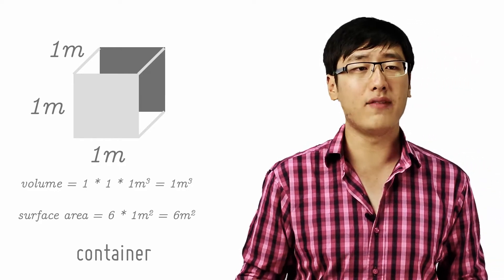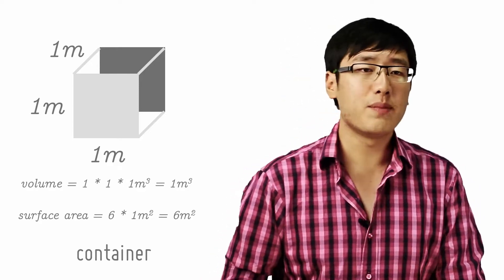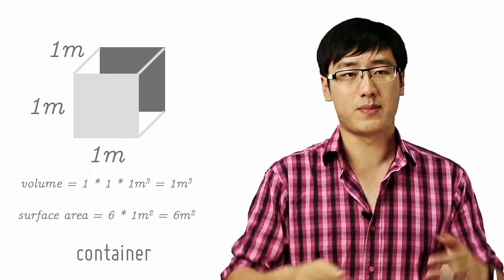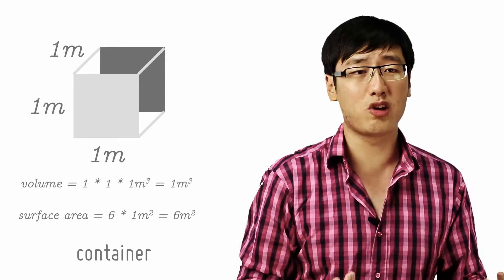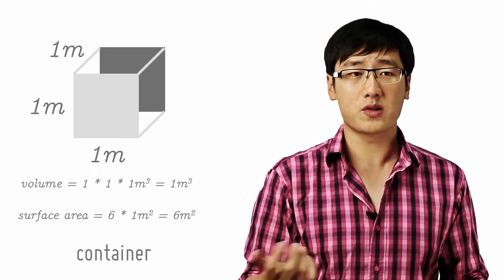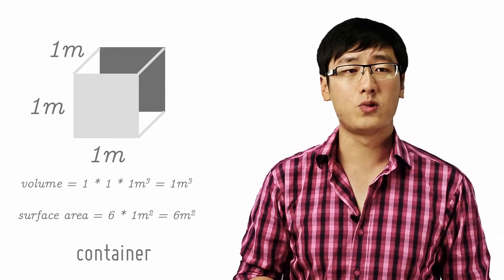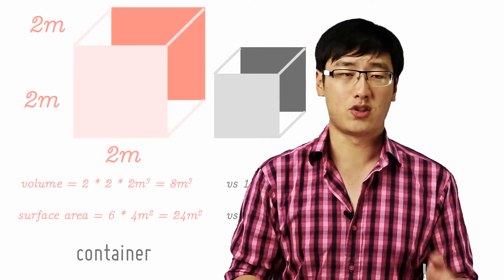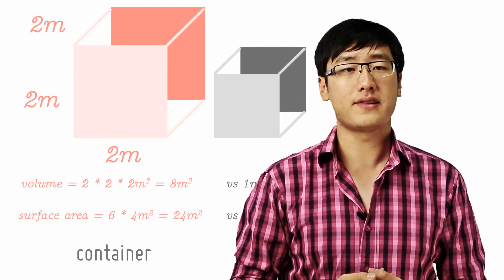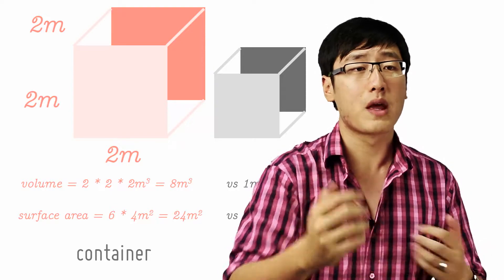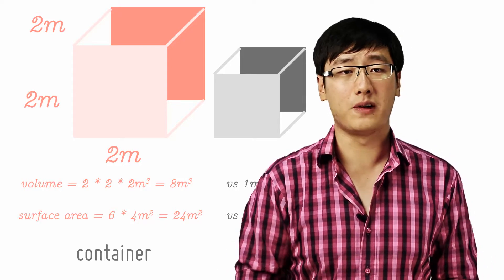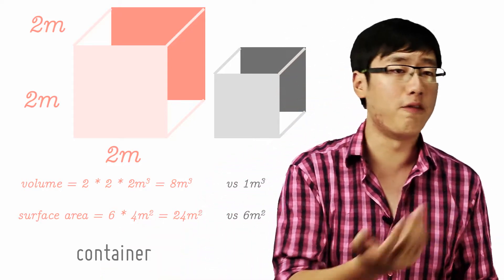Large containers have a bigger volume relative to surface area than smaller containers. For example, if you have a container one meter by one meter by one meter, it has a surface area of six square meters and a volume of one cubic meter. If you double each side to two meters, the volume will be eight cubic meters, but the surface area will be 24 square meters. There's an eight-fold increase in capacity while there's only a four-fold increase in the container surface area and cost.